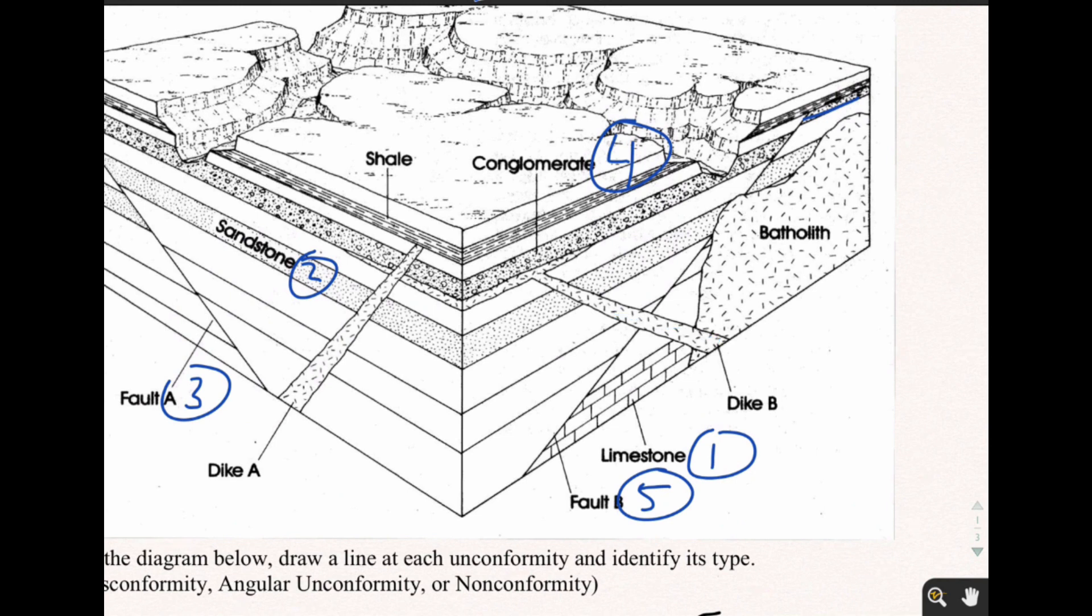If you'll notice, Dike A goes on top of Dike B. So again, it can't be Dike B. And if you also notice that the batholith goes on top of the fault. So the batholith had to have come after.